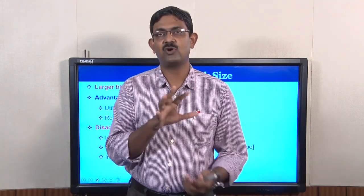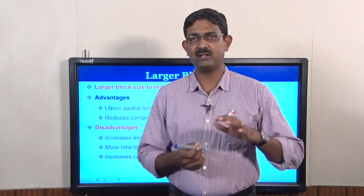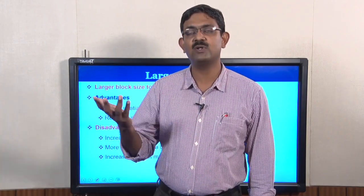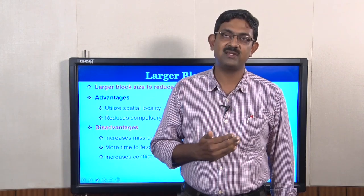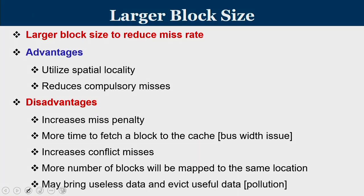For a given cache size, if you increase block size the number of sets comes down, because total cache size equals number of sets times block size in a direct-mapped cache. If block size increases, the set count falls, which can increase conflict misses. So increasing block size is a good idea, but it has two aspects: compulsory miss reduces, but conflict miss goes higher. Beyond a point, conflict miss will be much higher than the saving from compulsory miss. Very large block sizes can also bring useless data and evict useful data, which is known as pollution.